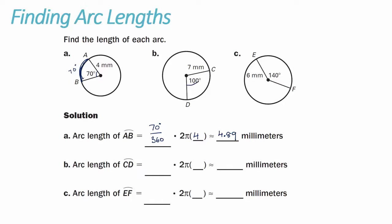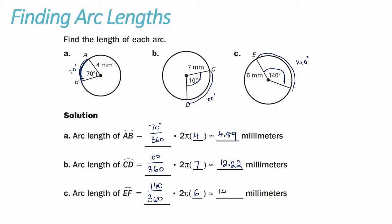In B, the central angle is 100 degrees, so the measure of arc CD is also 100 degrees. Taking 100 over 360 times 2 pi r, where r is 7, gives an arc length of 12.22 millimeters. For C, the central angle is 140 degrees, so the measure of arc EF is 140 degrees. Taking 140 over 360 times 2 pi r, where the radius is 6, gives an arc length of 14.66 millimeters.